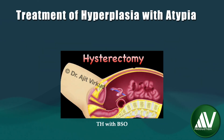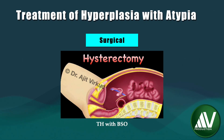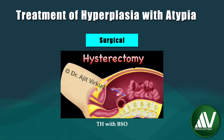Women with atypical hyperplasia should undergo total hysterectomy with bilateral salpingo-oophorectomy because of the risk of underlying malignancy or progression to cancer. A laparoscopic approach to total hysterectomy is preferable to an abdominal approach, as it is associated with a shorter hospital stay, less post-operative pain, and quicker recovery.